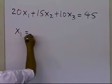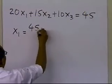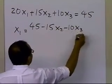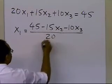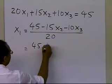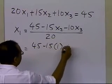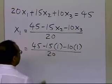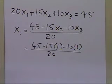So x1, the way the equation is going to be written is 45 minus 15 x2 minus 10 x3 divided by 20. So I get 45 minus 15 times 1 minus 10 times 1 divided by 20, because those are the values which I obtained for x2 and x3.